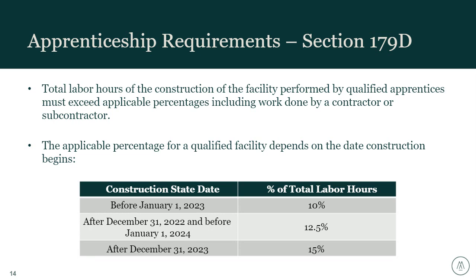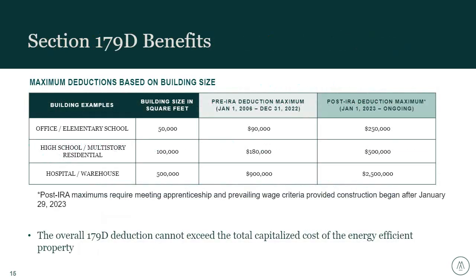Most large projects completing in calendar year 2023 will have started construction prior to this guidance taking effect, so that higher deduction rate will be available immediately to many taxpayers. This slide shows examples demonstrating the magnitude of the available deduction before and after the IRA. Post-IRA maximum values assume prevailing wage and apprenticeship requirements are met or the project is exempt. If those labor requirements are not met and you're outside the exempt period, the maximum value drops by a factor of five. The total claimed 179D deduction also cannot exceed the total capitalized cost of energy efficient property placed into service.